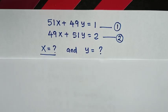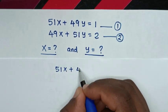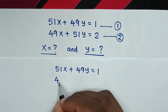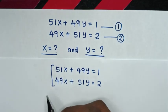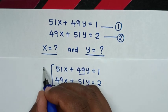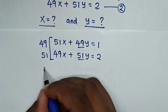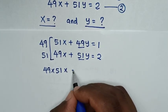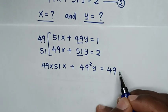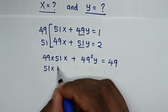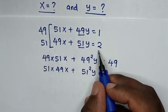Then, in the next step, to find the value of y from this problem: equation 1 is 51x plus 49y equals 1, and equation 2 is 49x plus 51y equals 2. To find y, the coefficient of y in equation 1 is 49, so we multiply by 49, and the coefficient of y in equation 2 is 51, so we multiply by 51. This gives 49 times 51x plus 49 squared y equals 49, and 51 times 49x plus 51 squared y equals 102.